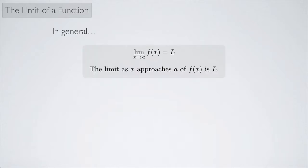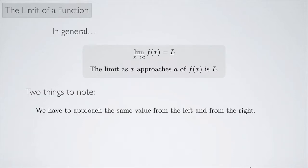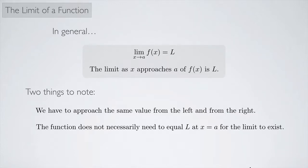In general, the limit as x approaches a of f(x) equals L means that as x approaches some value on the x-axis, the function approaches some value L on the y-axis. Two important things to note: we have to approach the same value from the left and from the right, and the function does not necessarily need to equal L at x = a. The limit doesn't care about what happens right at x = a — only what happens as we get closer and closer to a.